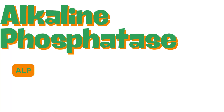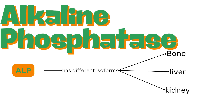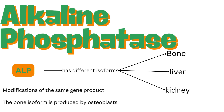Alkaline phosphatase, or ALP, has different isoforms found in the bone, liver, and kidney. These are modifications of the same gene product, identified by their unique carbohydrate content. The bone isoform, produced by osteoblasts, is a key indicator of bone formation activity.